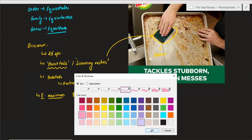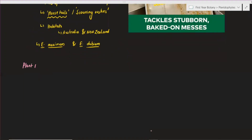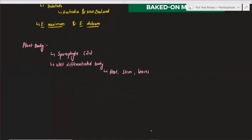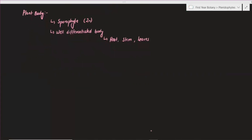The next topic is the plant body. The plant body is obviously sporophytic, and when we talk about the sporophytic body, it is always diploid. The plant body has three parts: roots, stem, and leaves. So in this video we can do the stem, roots, and leaves in the morphology.